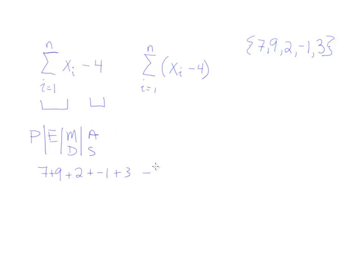So I'll work this out by doing 7 plus 9 is 16, then 2 more is 18, take away 1 from that, you get 17, 17 plus 3 is 20, and 20 minus 4 gives you 16. So that's the answer for the first summation.